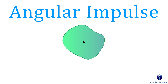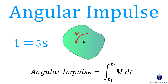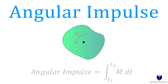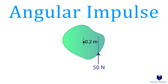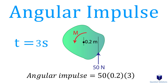For angular impulse, instead of a linear force applied over a time period, what if it was a moment? If we apply a moment for 5 seconds, the angular impulse is found by integrating the moment from 0 to 5 seconds. For example, a 50 newton force that's 0.2 meters from the center of mass applied for 3 seconds creates a moment; the angular impulse is force times perpendicular distance times time.